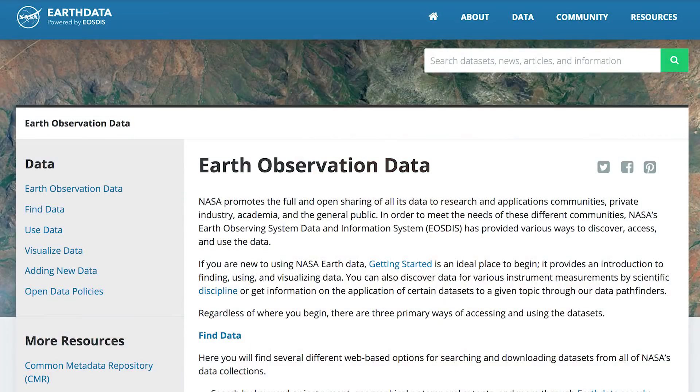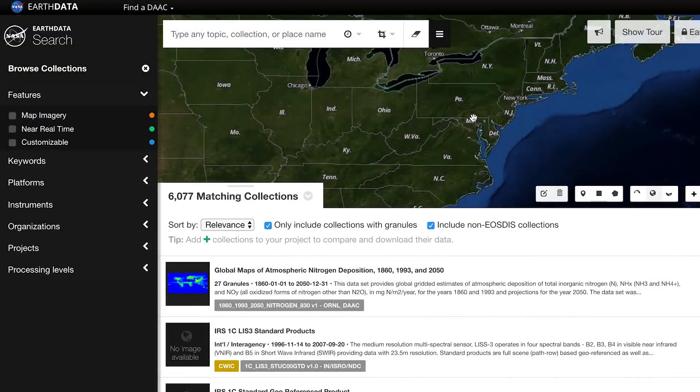Fortunately there are data sets out there that we can take advantage of that use IoT or IoT-like technologies to give us a continuous stream of data that we can use in our applications. A really big one is NASA's Earth Observation Data—basically this is a data set that will look at the earth in numerous different ways where you can get information like ozone data and weather data.